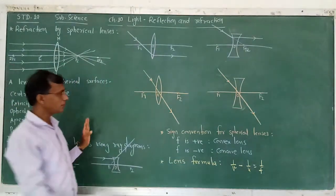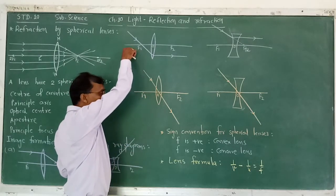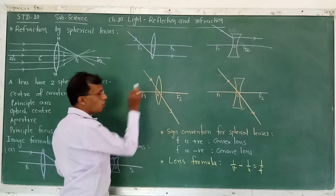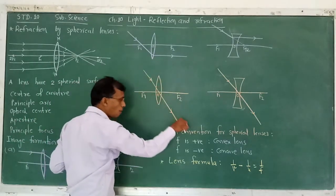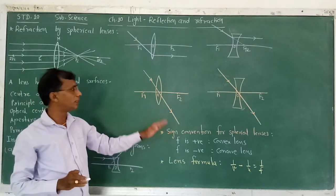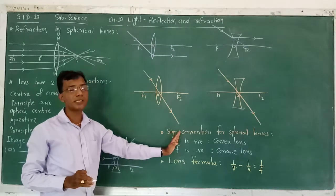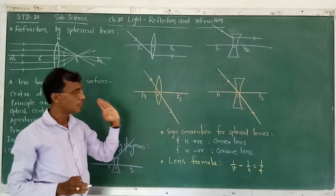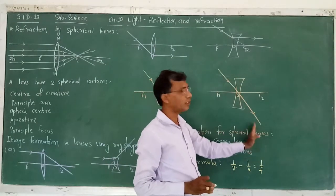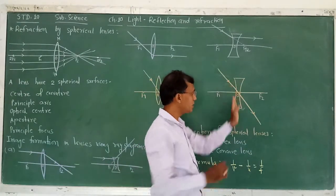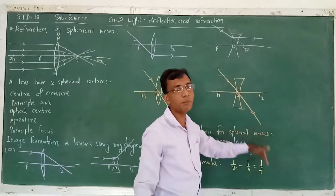Third, a ray passing through the optical center O of a convex lens passes through without any deviation — it continues straight. Similarly, for a concave lens, a ray passing through the optical center O also passes through without any deviation.